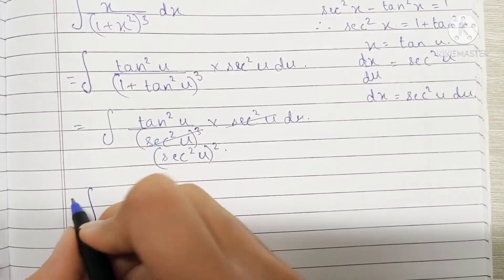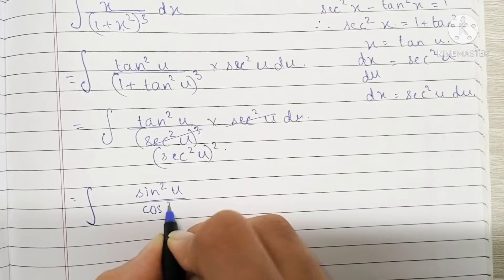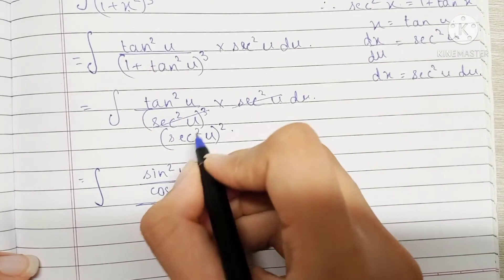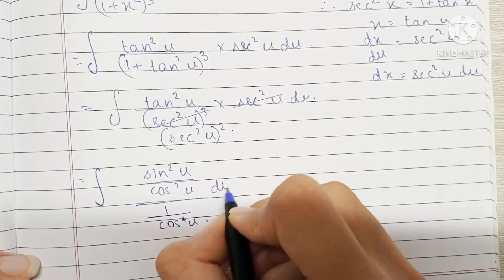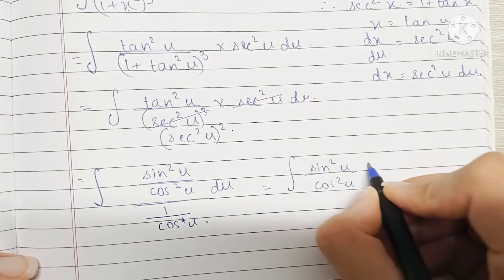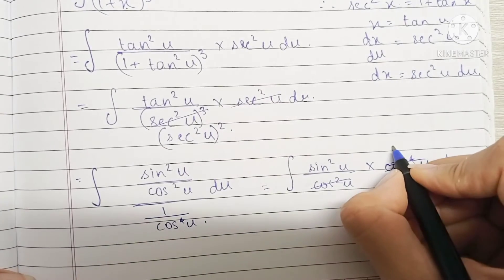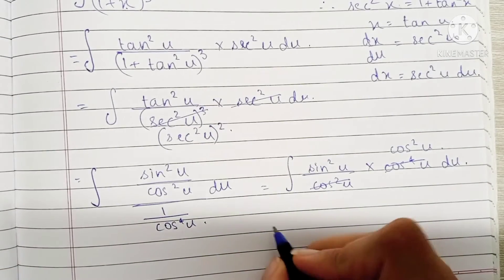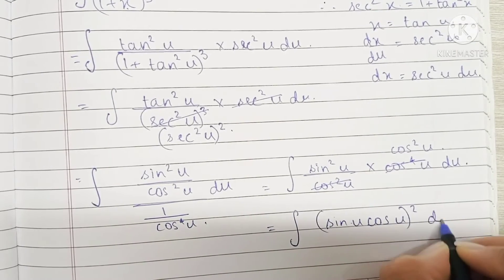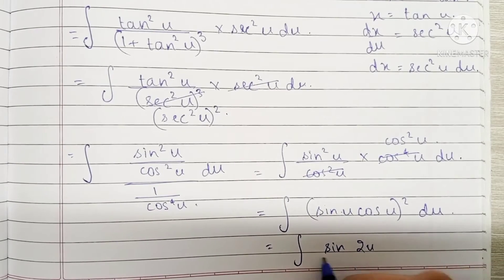Now I'm going to write all of this in terms of sin and cos. We have tan which is sin/cos, so this is sin²u upon cos²u. Sec²u is 1 upon cos²u, so the denominator becomes 1 upon cos⁴u. Bringing cos⁴u to the numerator and cancelling cos²u, we get the integral of sin²u · cos²u du.